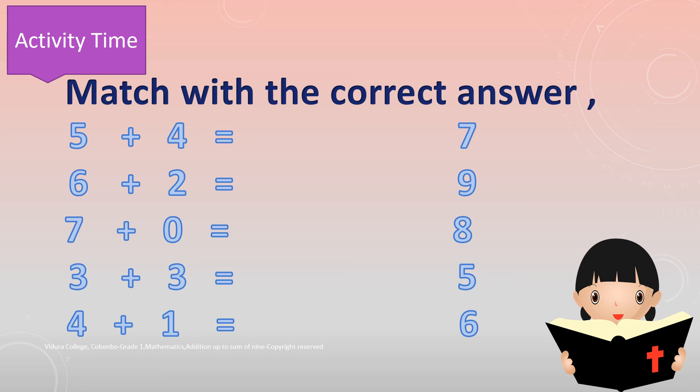First one. 5 plus 4 is equal to 9. Second one. 6 plus 2 is equal to 8. Third one. 7 plus 0 is equal to 7.